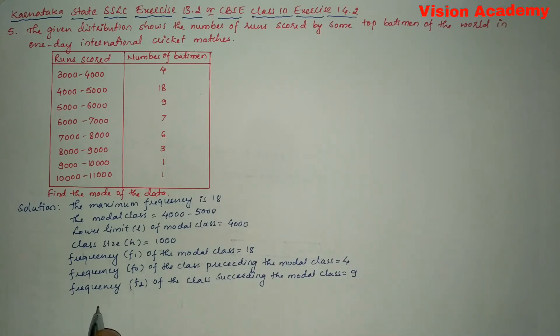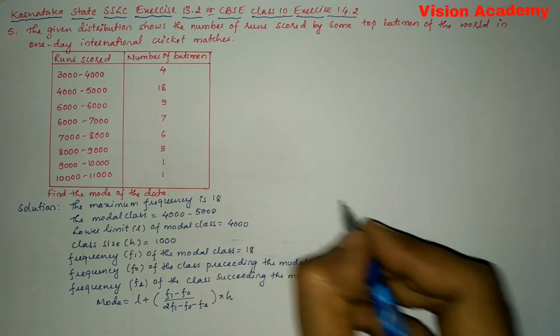Now let us write the formula to find mode of the given data. So mode is equal to L plus (f1 minus f0) divided by (2 times f1 minus f0 minus f2) times h. Now let us substitute the values.